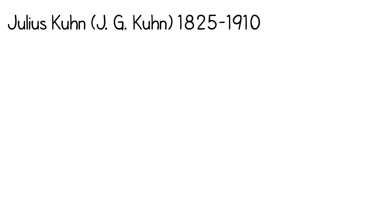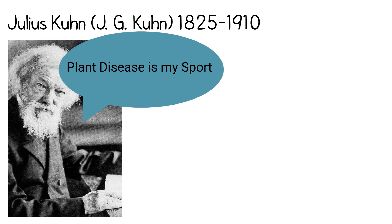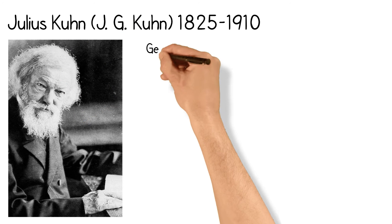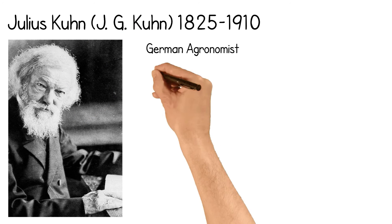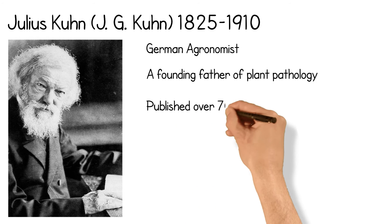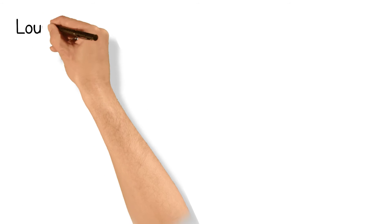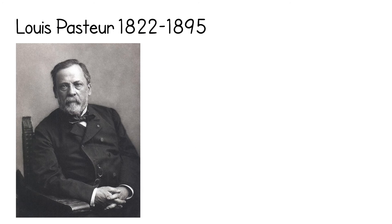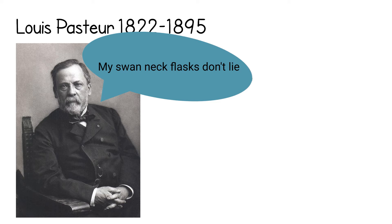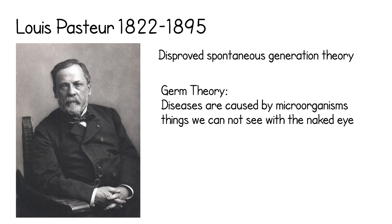Julius Kuhn, 1825–1910. He was a German agronomist and one of the founders of plant pathology. He focused on fungal plant diseases, including ones affecting beets and canola. More than 70 papers on microbiology and plant diseases were published during his career. Louis Pasteur, 1822–1895, demonstrated that fermentation does not cause spontaneous generation, disproving the spontaneous generation hypothesis and giving way to germ theory.